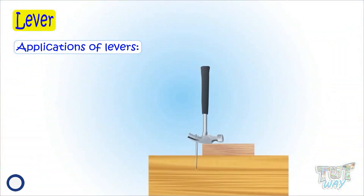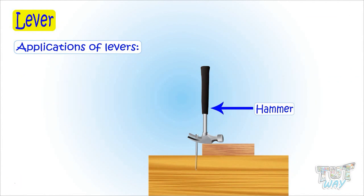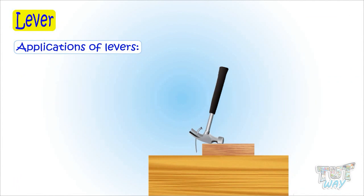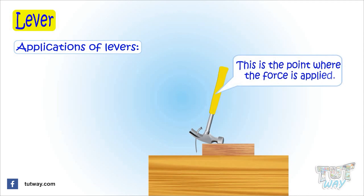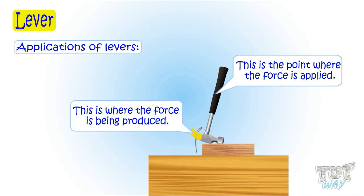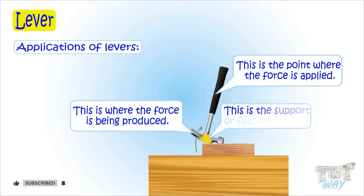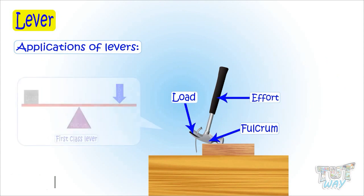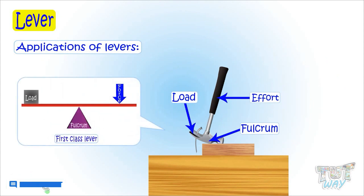Here is a hammer — let's see how it is based on a lever. This is a first class lever. This is the point where you apply force, and this is where the force is being produced, or the load. This is the support, or the fulcrum. So a hammer is a class one lever.